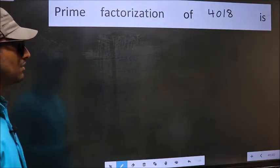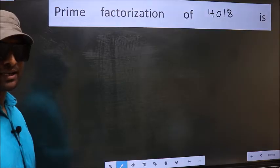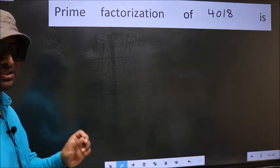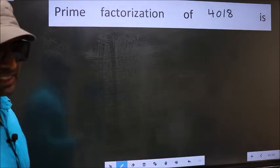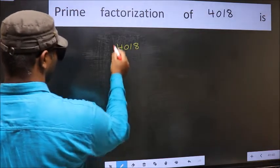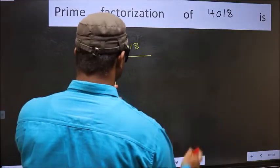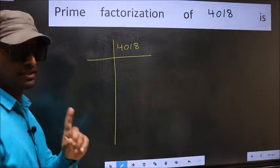Prime factorization of 4018. To do prime factorization, first we should frame it in this way: 4018. This is your step 1.